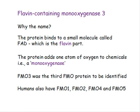Flavin-containing monooxygenase 3, or FMO3. Why the name? The protein can't act on its own — it has to bind to a small molecule called FAD, which is the flavin part, and that's why we call it flavin-containing. The monooxygenase part of the name comes from the fact that the protein adds one atom of oxygen to the chemicals that are substrates for it — one atom from molecular oxygen, which has two atoms, and therefore monooxygenase.